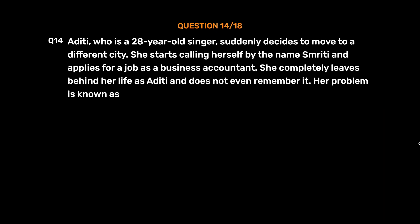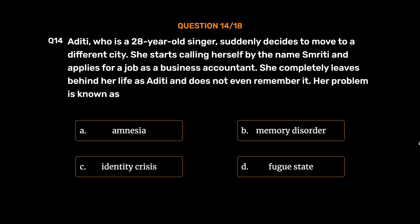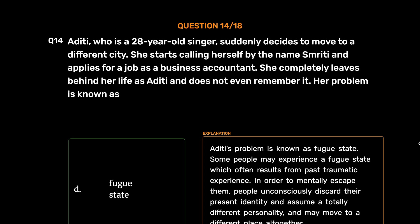Question number 14. Aditi, who is a 28-year-old singer, suddenly decides to move to a different city. She starts calling herself Smriti and applies for a job as a business accountant. She completely leaves behind her life as Aditi and does not even remember it. Option A: Amnesia. Option B: Memory disorder. Option C: Identity crisis. Option D: Fugue state. The correct answer is Option D, Fugue state. Some people may experience a fugue state, which often results from past traumatic experience, causing them to unconsciously discard their present identity and assume a totally different personality.